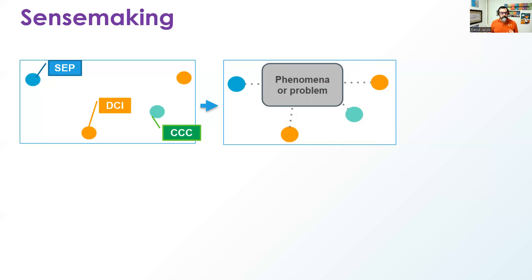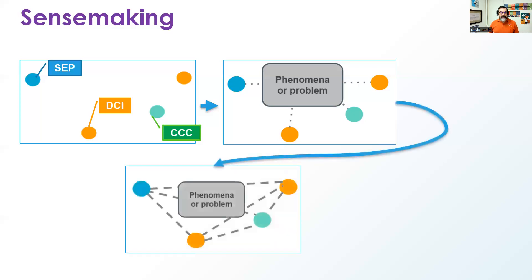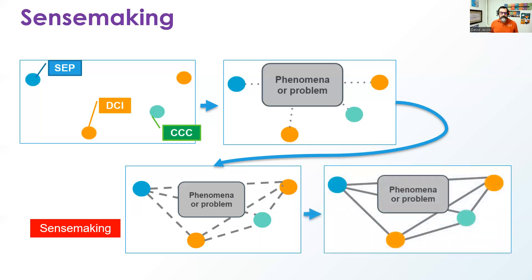Students may also take their pre-understandings of the disciplinary core idea and bump that up against the phenomenon or problem. They may have misconceptions not consistent with the phenomenon, and then start to question whether they really know the disciplinary core idea. The same goes with the cross-cutting concepts — they may look at something through a pattern, cause and effect, or scale, proportion, and quantity. As students continue interacting with those three dimensions and the phenomenon or problem they are faced with, they start to gain greater understanding of the practices, the disciplinary core ideas, and the cross-cutting concepts. This is considered sense-making — and sense-making isn't new or just specific to science; it is how we learn anything.